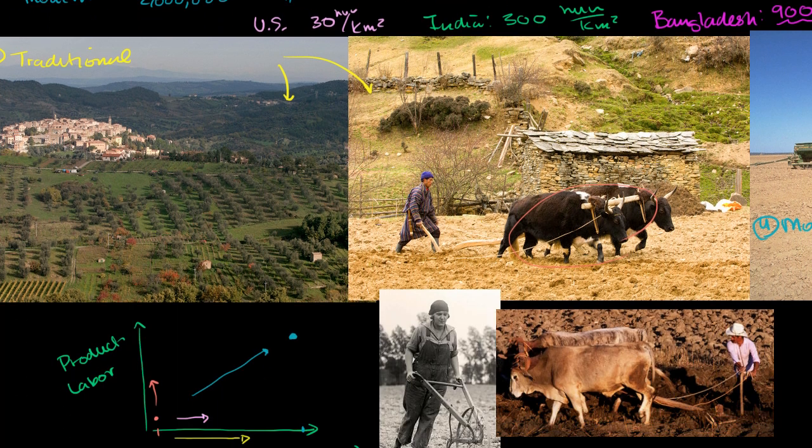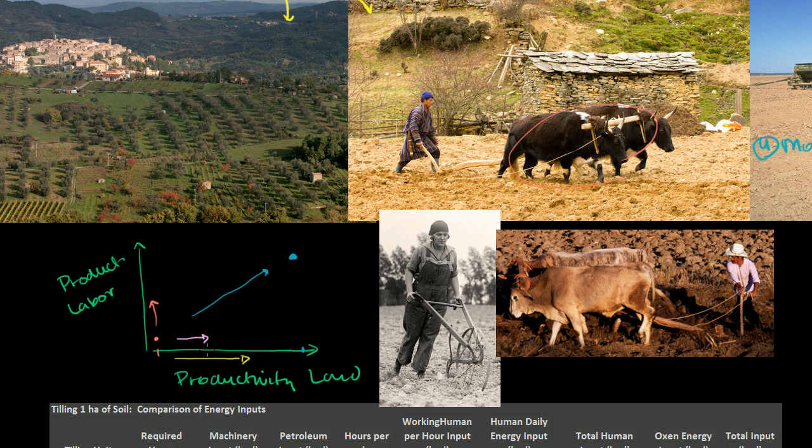Now, what we want to think about in this video - the last video was this axis right here, getting more and more out of the land. What I want to think about in this video is, how did humans, through different technologies, get by doing less and less of the labor for getting those calories out of the land?